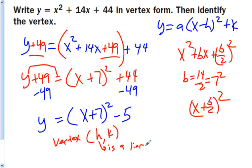So I'm going to look here. My h value is always inside the parenthesis. So that's plus 7. So the opposite of plus 7 is negative 7. And then my k is the value outside, which is a minus 5. It tells the truth. So my vertex is the point negative 7, negative 5.